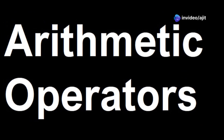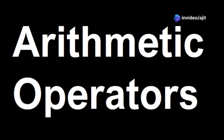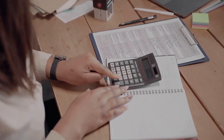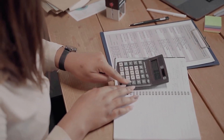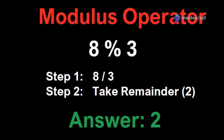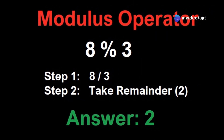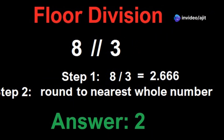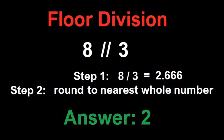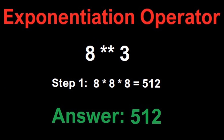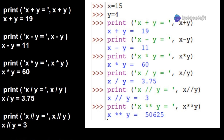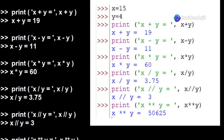First up among the different types of operators in Python are the arithmetic operators. These handle basic mathematical operations: plus adds two numbers, minus subtracts, asterisk multiplies, forward slash divides. Then we have the percent sign, called the modulus operator, which gives the remainder. Double forward slash performs floor division, that is, it rounds down to the nearest whole number. Double asterisk is the exponentiation operator — it raises one number to the power of another. Have a look at these simple examples.